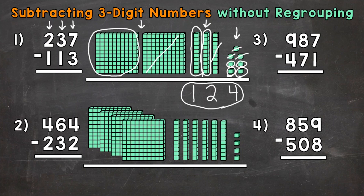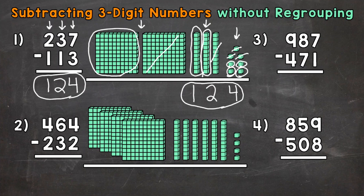Let's solve this to the left where we have the original problem as well. Start with the ones: seven ones minus three ones gives us four. Move to the tens: three tens minus one ten gives us a two in the tens. And then lastly, the hundreds: two hundreds minus one hundred gives us a one in the hundreds. So we get one hundred twenty-four over to the left as well.